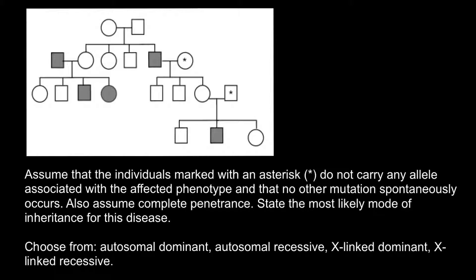Hello and welcome to Nikola's genetics lessons. In this video I'm going to explain how by looking at a pedigree you can determine the mode of inheritance. Assume that individuals marked with an asterisk do not carry any allele associated with the affected phenotype, that no other mutation spontaneously occurs, and that there is complete penetrance. State the most likely mode of inheritance, choosing between autosomal dominant, autosomal recessive, X-linked dominant, or X-linked recessive.